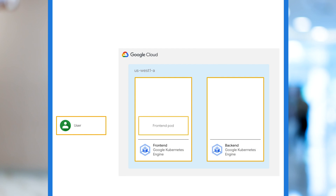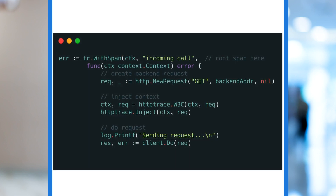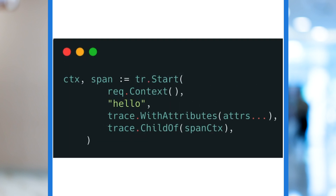We have a front-end service that responds to user requests and makes calls to a back-end service. It has to wait on that back-end call to complete to return the response back to the user. We want to trace this interaction to understand both total latency and latency for each service. In the front-end code, we start tracing and create the root span, then make a request to the back-end with the appropriate context — data embedded in the HTTP headers that our back-end can use to append subsequent spans to our trace. In the back-end code, we extract the context from the incoming request and use it to create additional spans, allowing us to explicitly measure the latency of our back-end service.